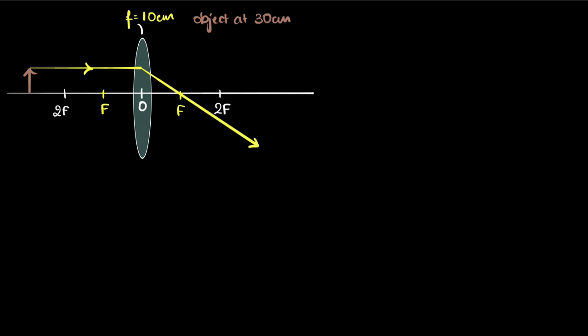The second ray of light we can draw through the optic center. That's the specialty of the optic center. It goes undeviated, so it will not refract. It will go straight.